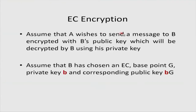Now let us look at EC encryption. Assume A wishes to send a message to B encrypted with B's public key, to be decrypted by B using his private key. Assume both A and B know a standard elliptic curve - there are several such standards, perhaps 10 to 15 elliptic curves suitable for cryptography. B chooses private key b (kept secret, like the private key in RSA) and computes the corresponding public key BG using elliptic curve scalar multiplication. A needs B's public key to encrypt.